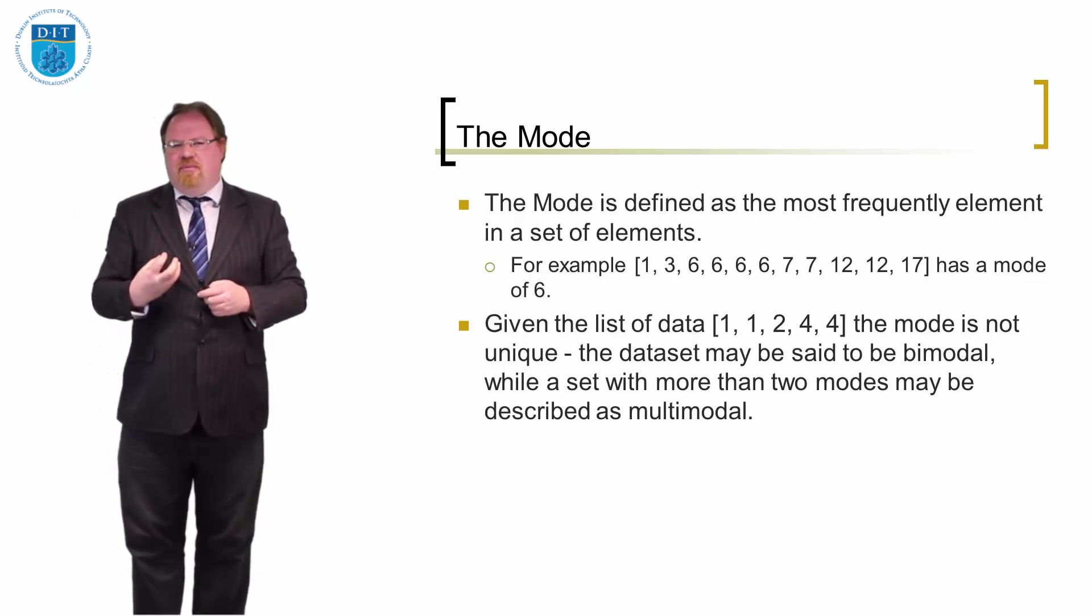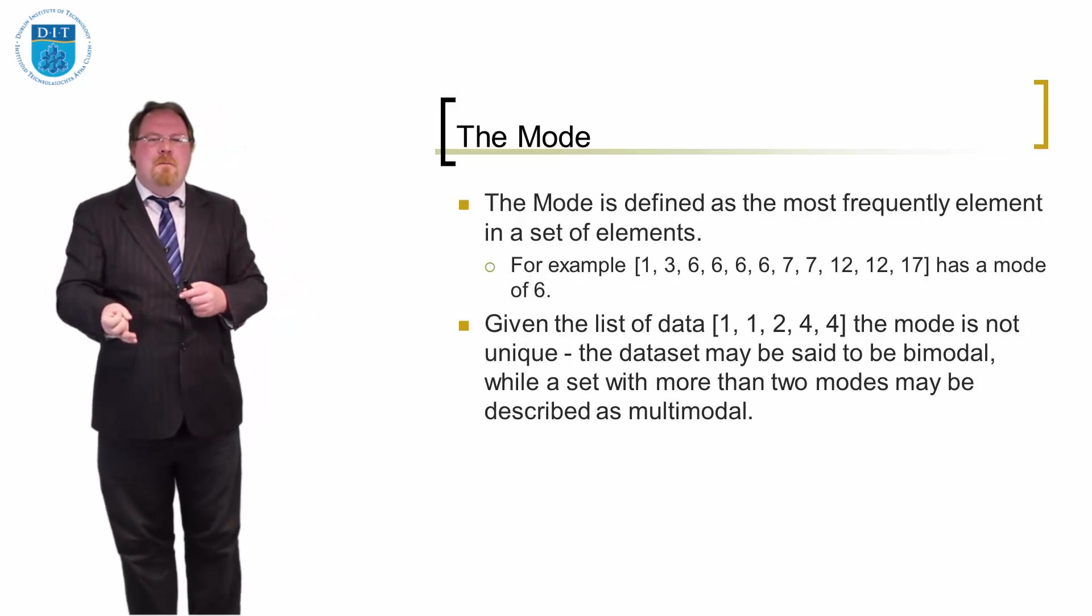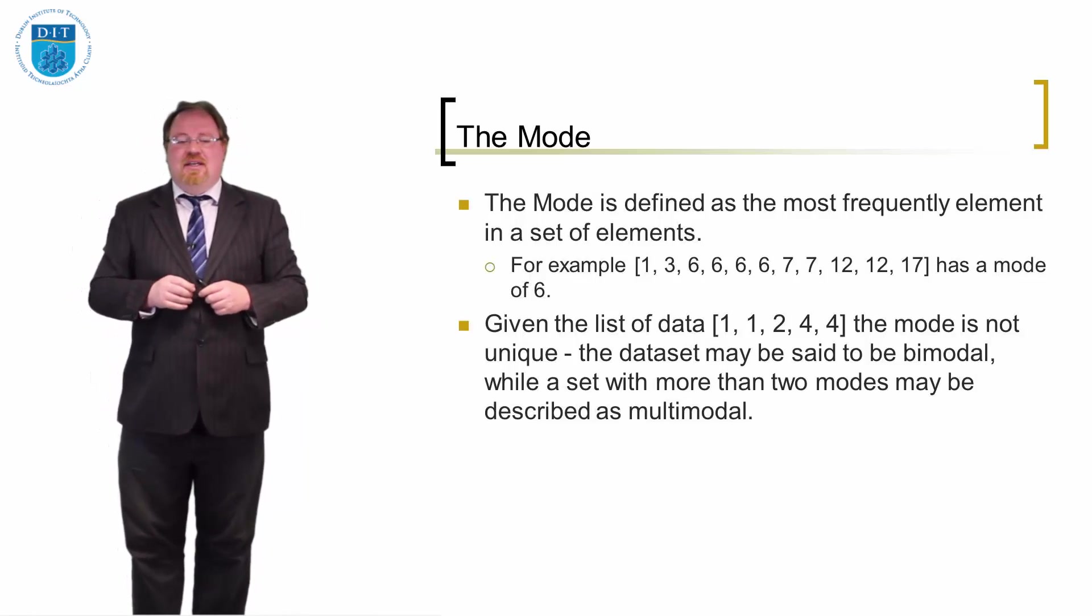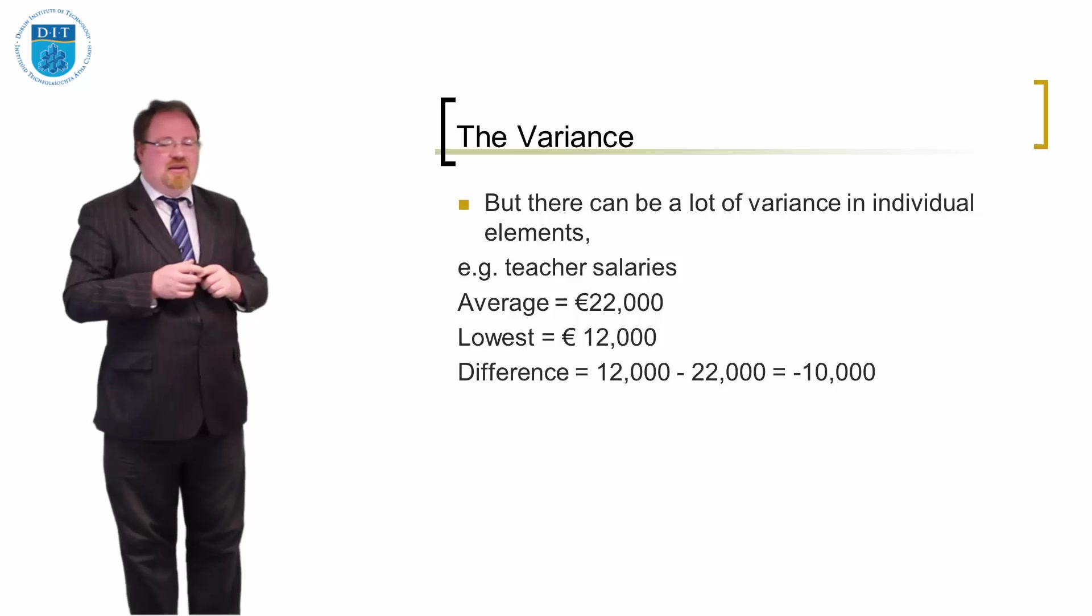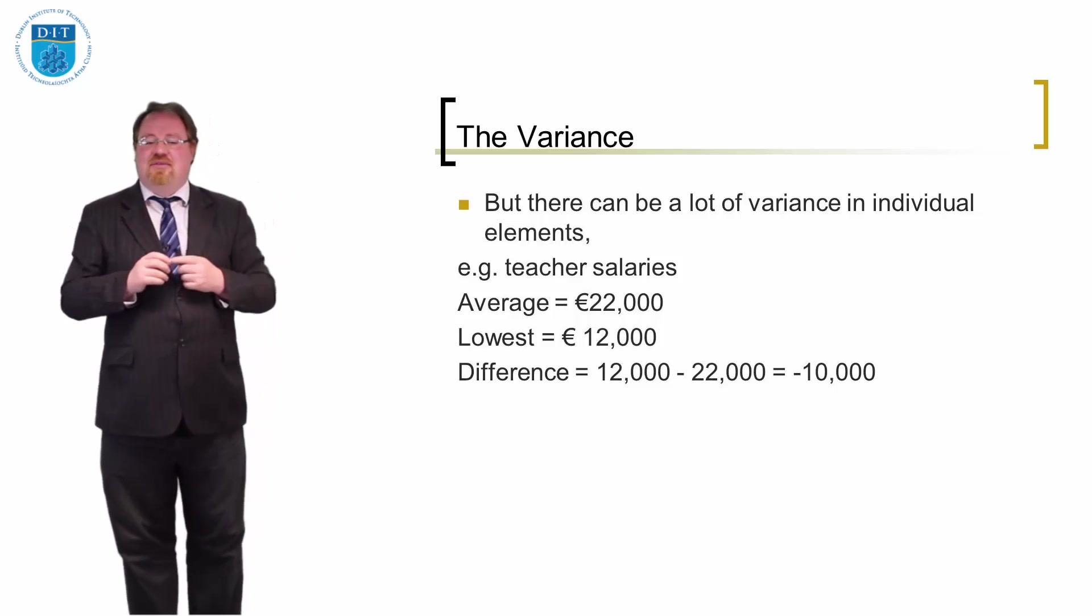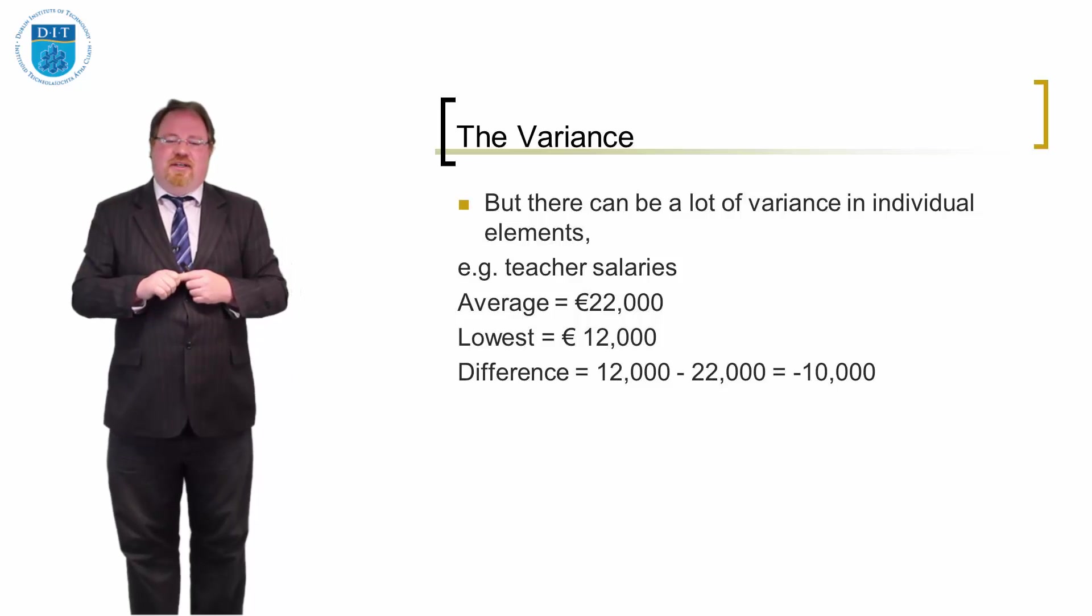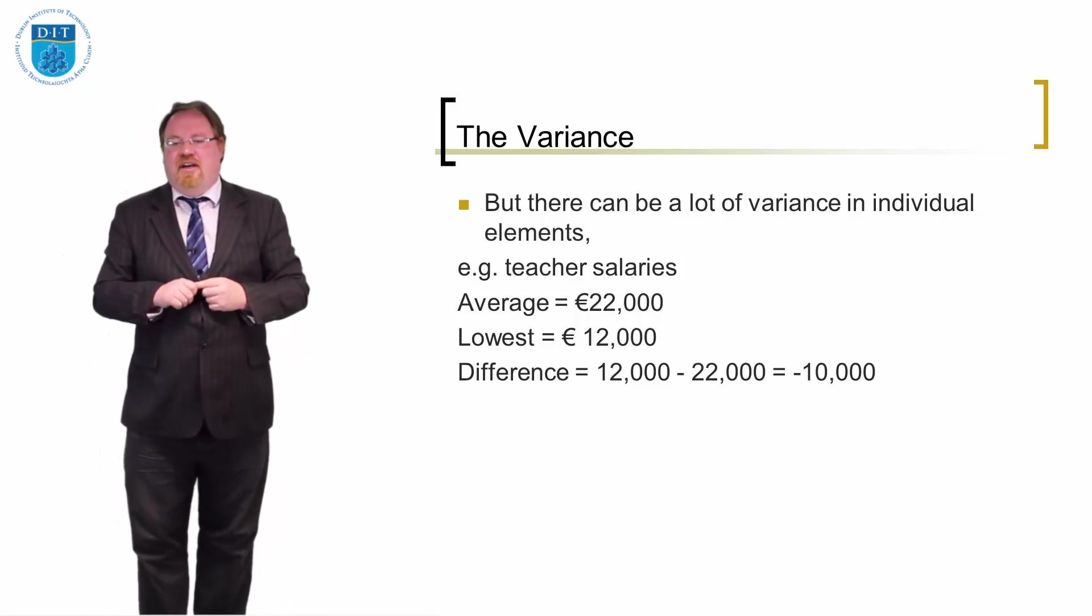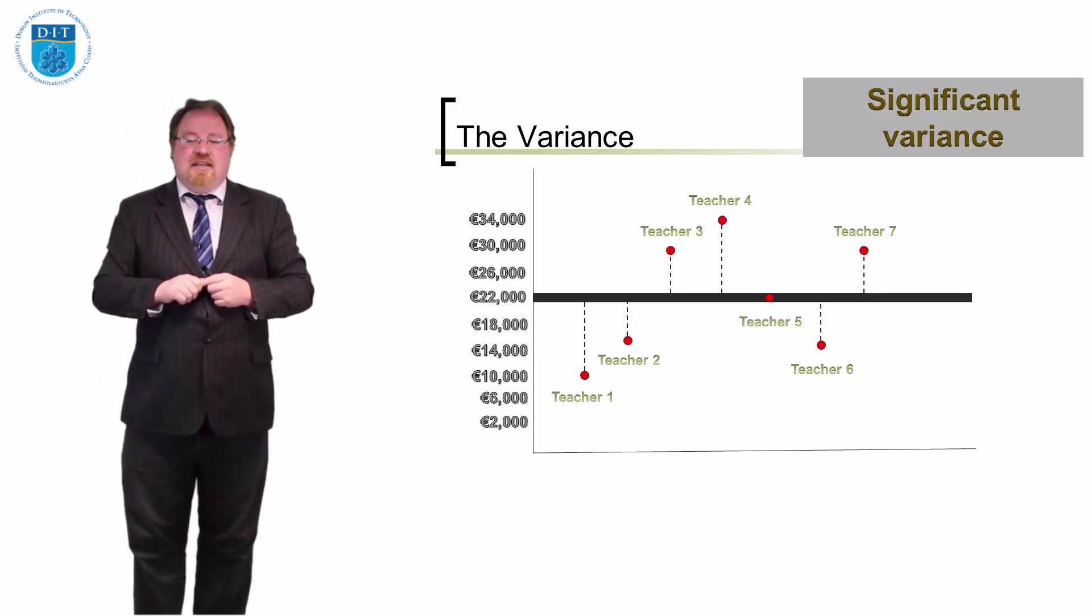A concept very much allied with the average and the three averages we looked at—the mean, mode and median—a concept that's closely allied with that is called the variance. So when we get a mean of a particular value, let's say here we have teacher salaries. And let's say the average teacher salary is 22,000 euro a year. How much do individual teachers vary in their salary from that 22,000 a year? Are most people around 22,000? Are some people on mega salaries? Some people on very low salaries? Or how does that work?